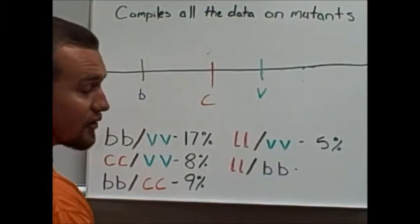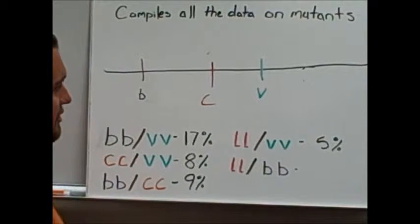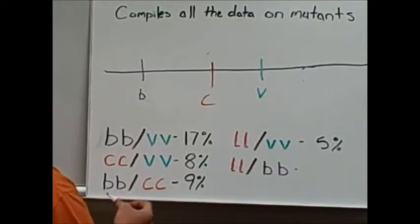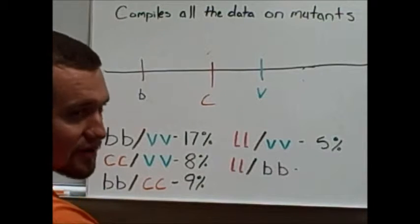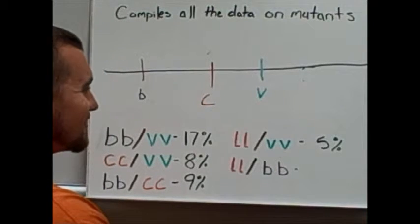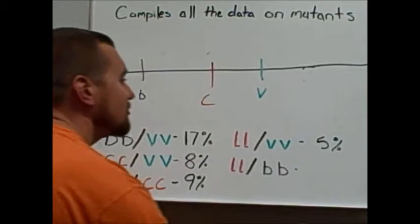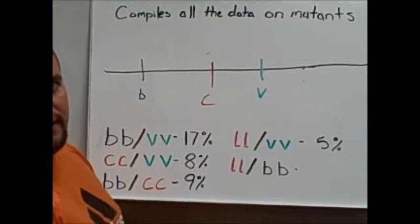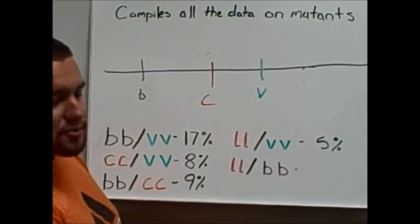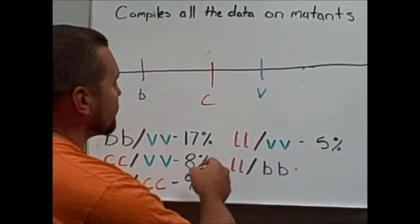He looks at another mutation. This is the lobed wings. Between the lobed wing gene and the vestigial wing gene, we see a recombination rate of only 5%. It almost never switches over. So you guys want 5% away?